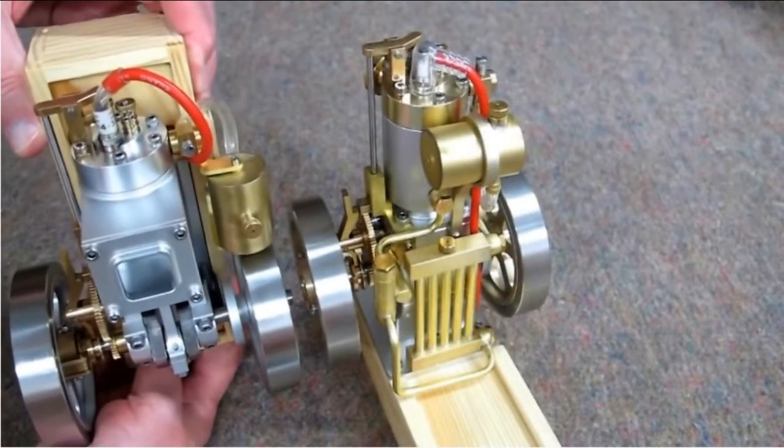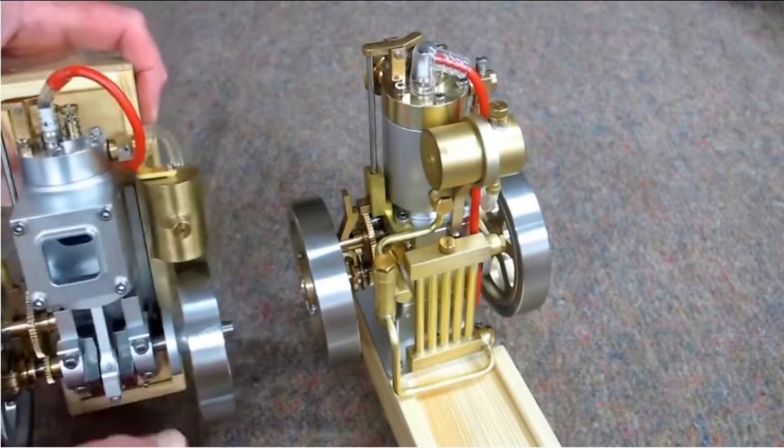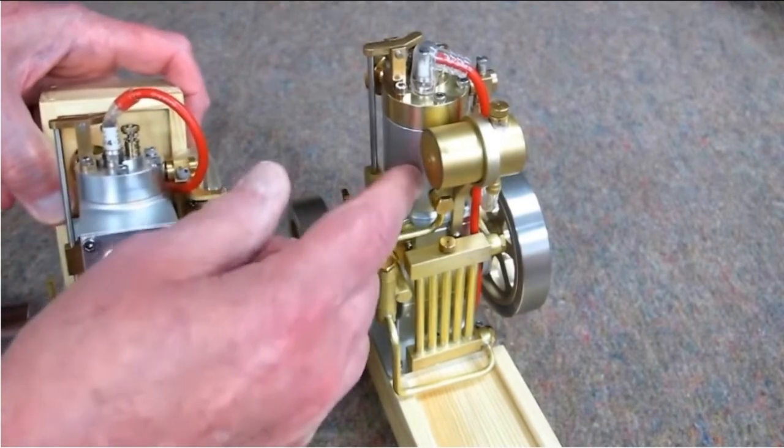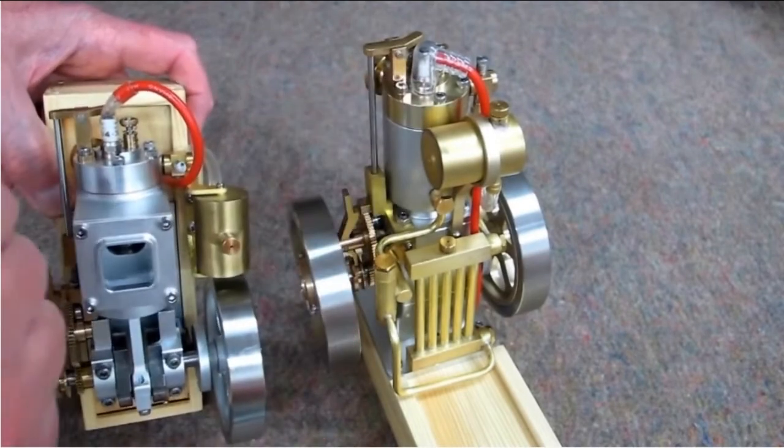If I stand the other engine on end, they're very much the same size. Instead of having an open water jacket, the water jacket's now enclosed. And the head on the vertical engine appears to be brass.